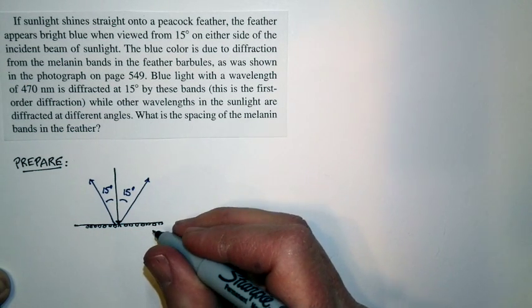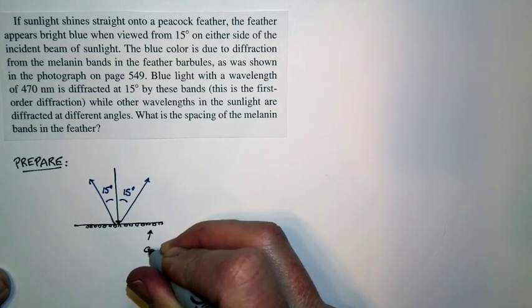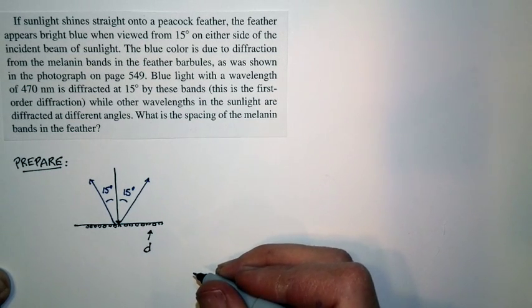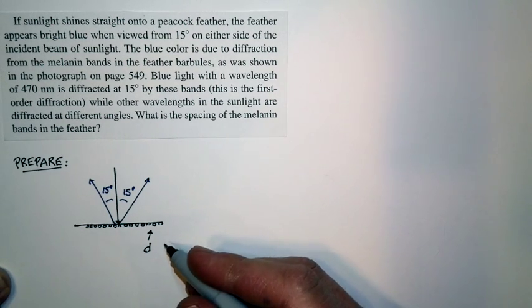And so let's take a look at this. There's a certain spacing of the melanin bands in the feathers, which is D. And that is just similar to the D, that's the spacing of the lines in a diffraction grating.